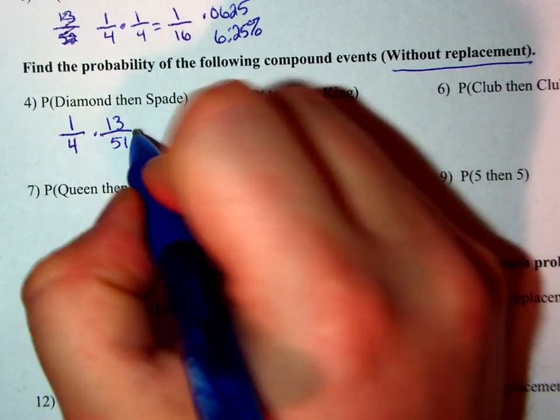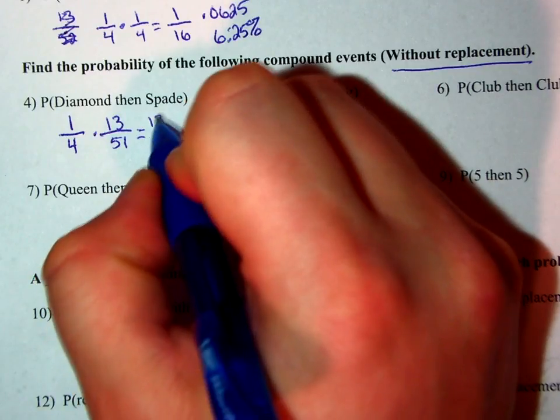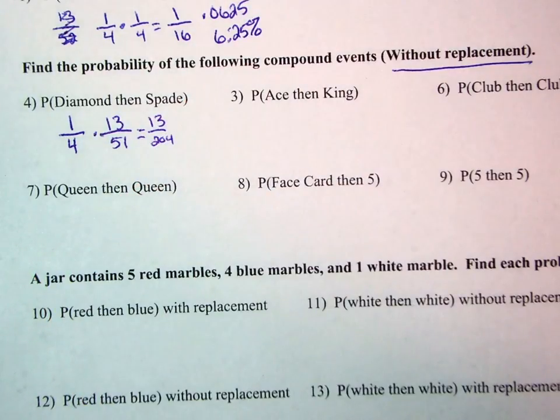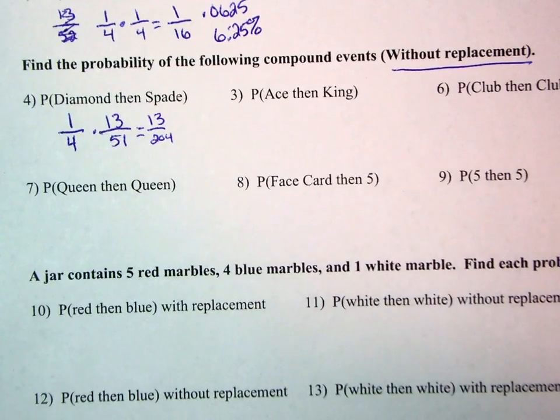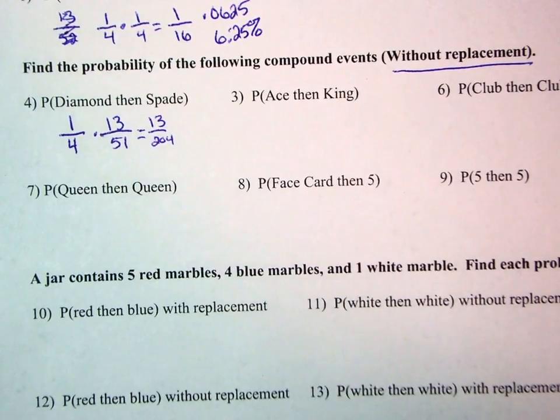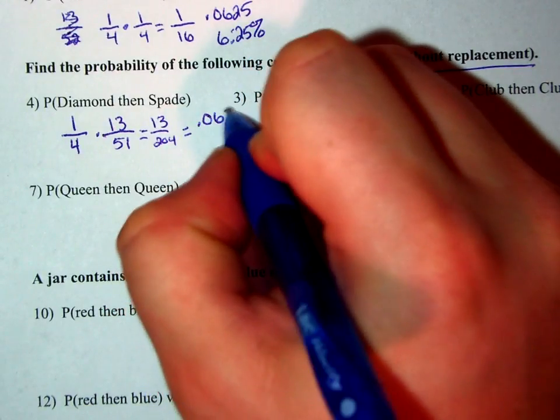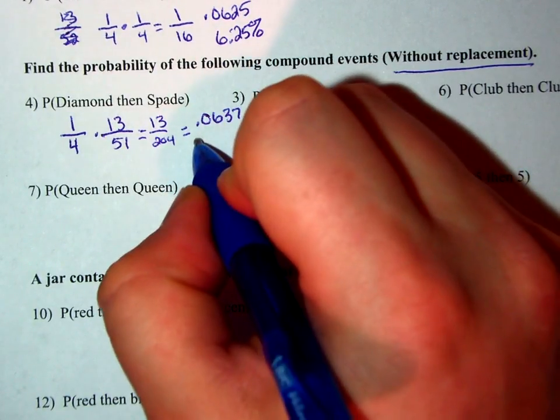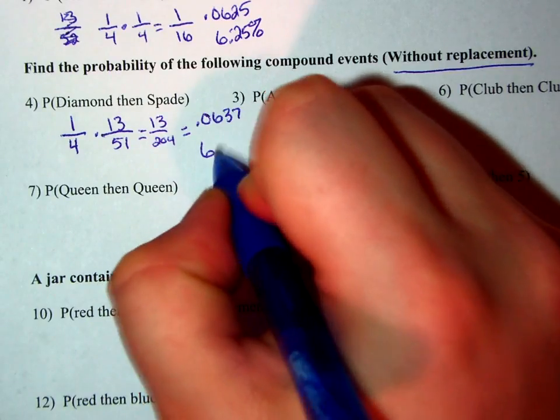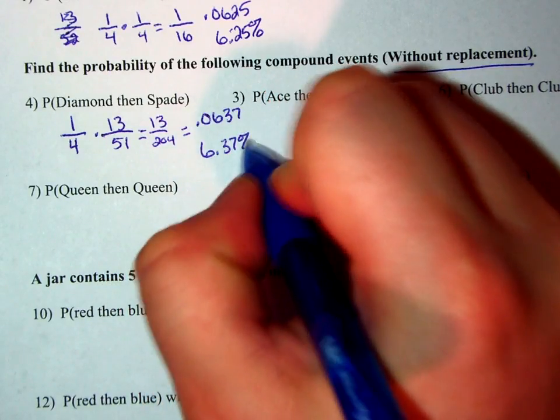And so we can multiply across. We're going to end up with 13 over 204. 13 is a prime number, so I don't think anything is going into either one of those. So we will simply convert that into a decimal, which will equal .0637, which is going to equal 6.37%.